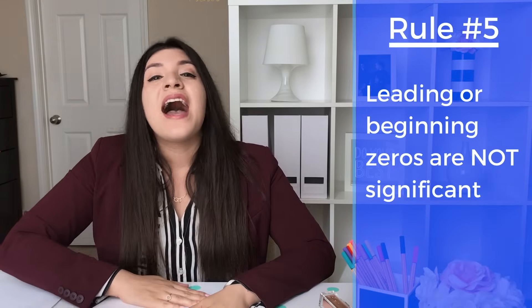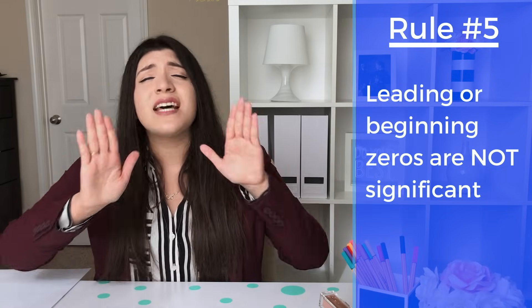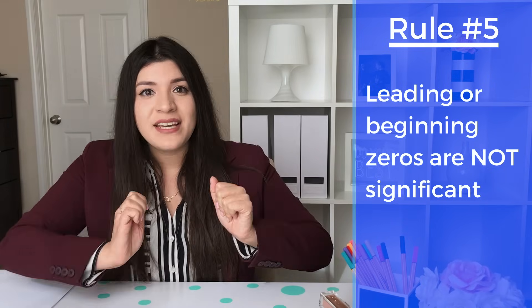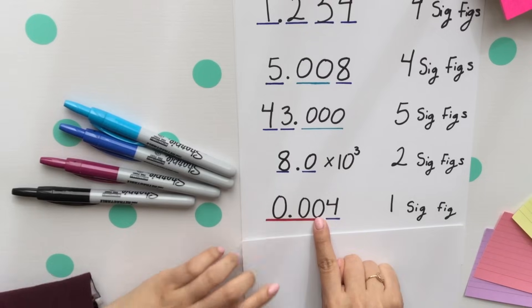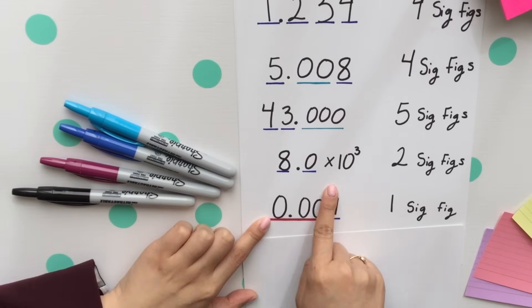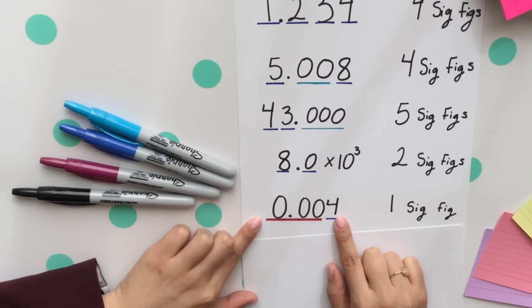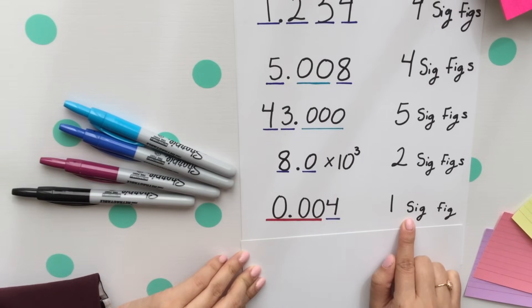Rule number five, any leading or beginning zeros are not, I repeat, not significant. Looking here, these three are leading or beginning zeros. They do not count as significant. Only this four counts, so there's only one sig fig.